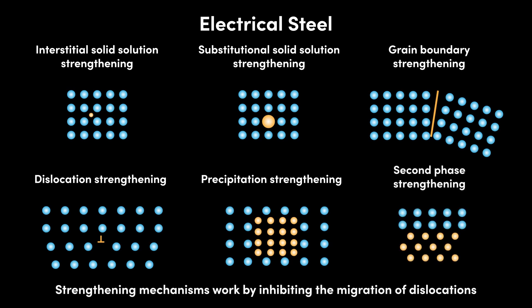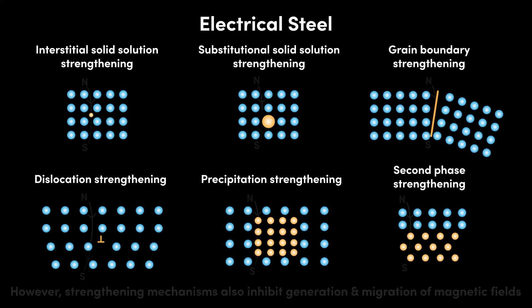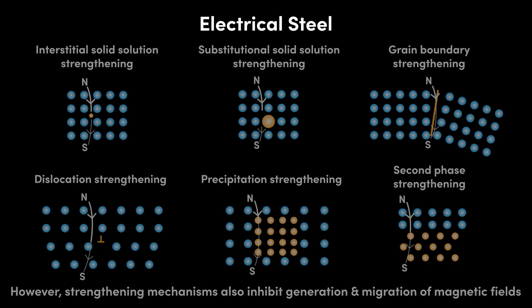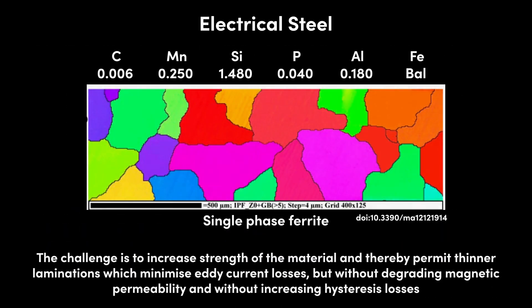All of these strengthening mechanisms work by inhibiting the migration of dislocations through the material. However, all of these strengthening mechanisms also inhibit the generation and migration of magnetic fields and thereby increase hysteresis losses and decrease magnetic permeability. This is why, with the exception of large silicon additions for electrical resistivity, electrical steels have very lean chemical compositions, with minimal solid solution strengthening, very large grain sizes of typically more than 100 microns, single-phase ferritic microstructures without any secondary phases or intentional dislocations, and with very carefully controlled precipitates. The challenge with electrical steels, especially for rotor core applications, is to increase the strength and permit thinner laminations which minimize eddy current losses, but without degrading magnetic permeability and without increasing hysteresis losses.